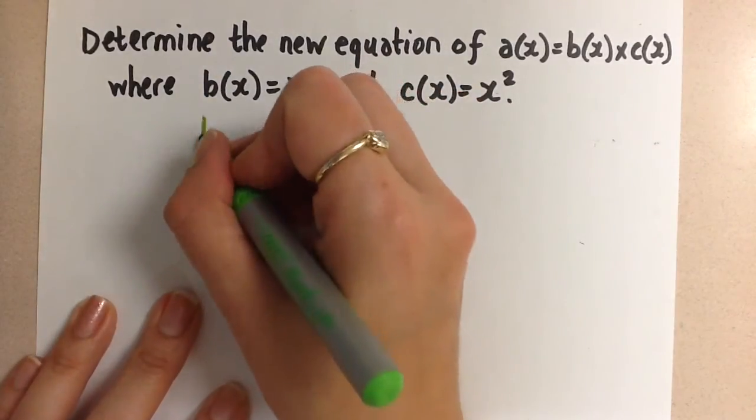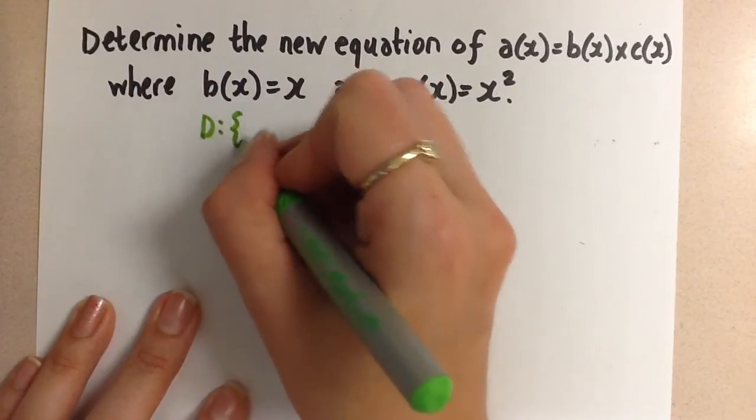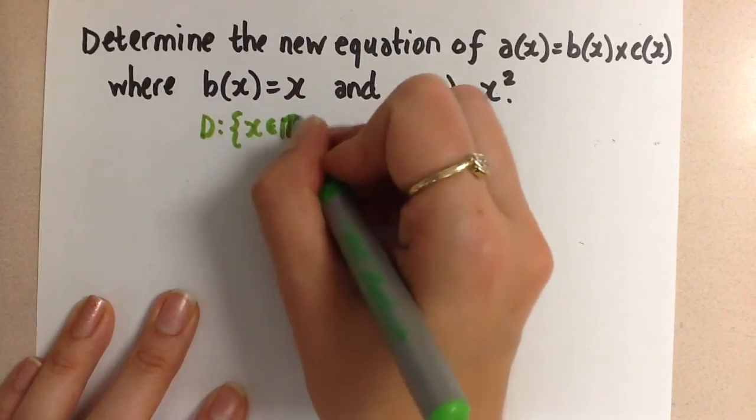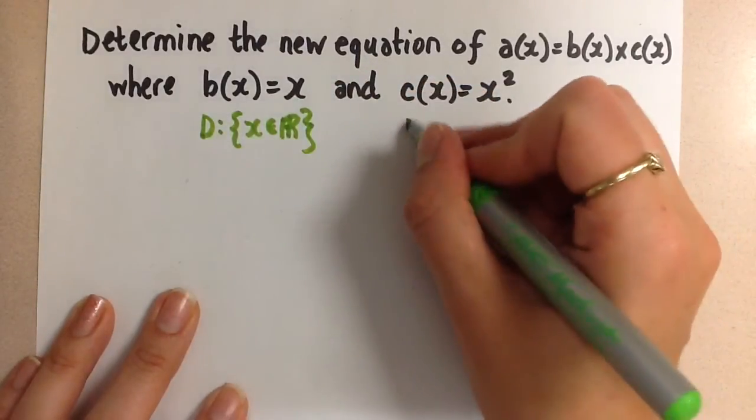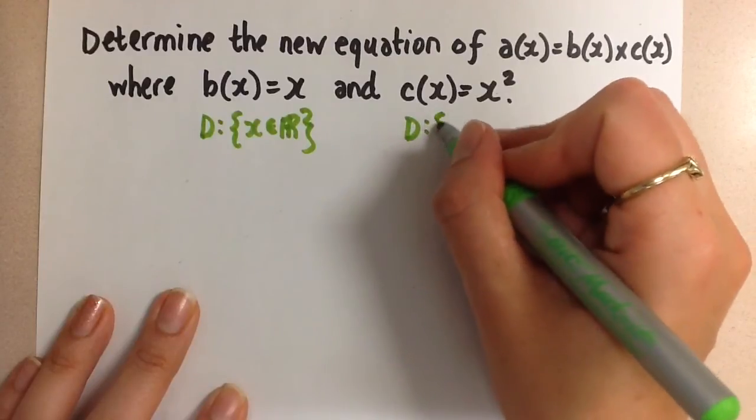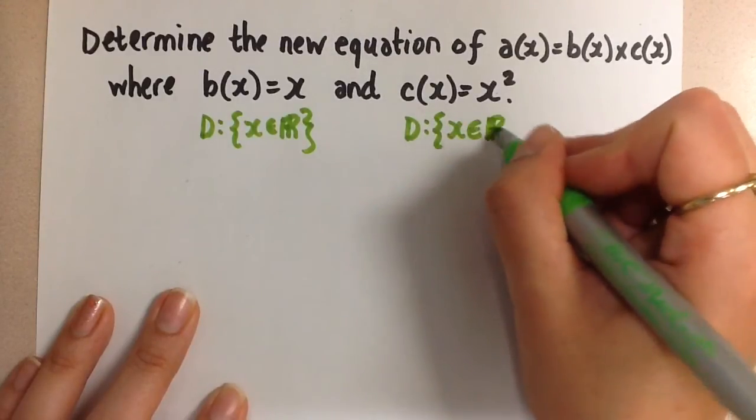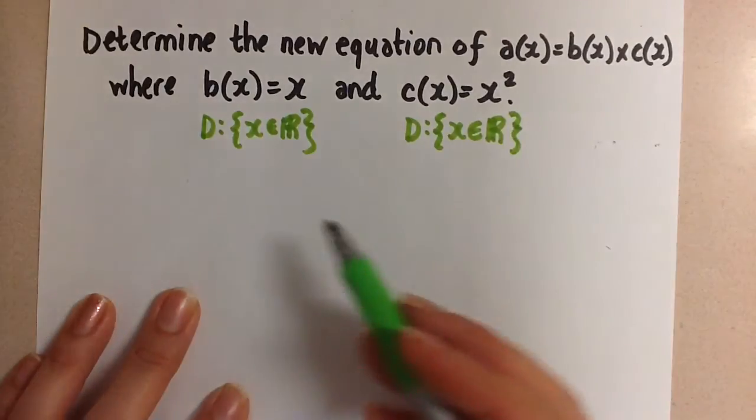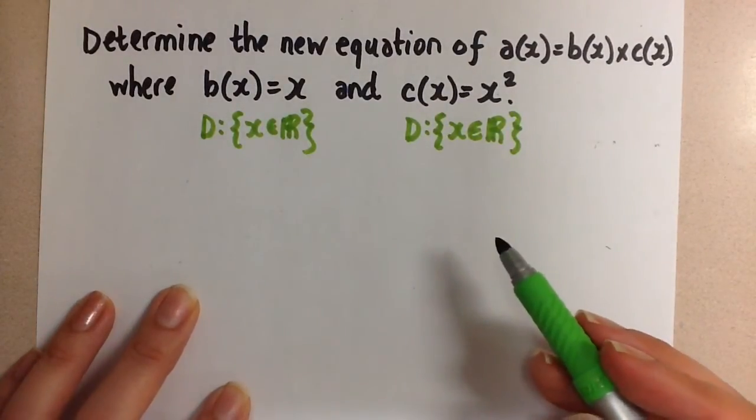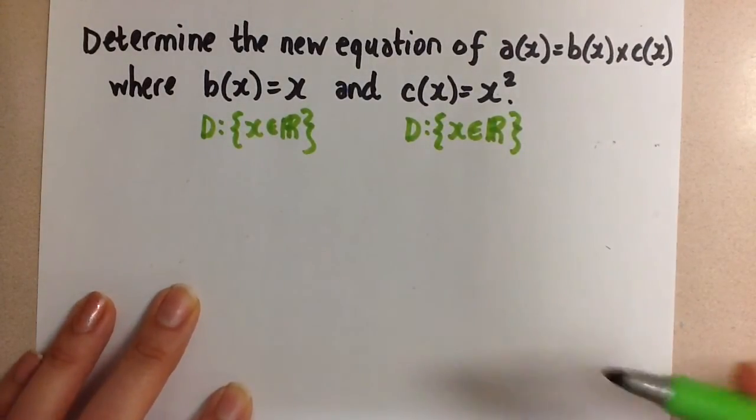The domains for both of these functions are exactly the same. They span all of the real numbers. So both functions have a domain that is the set of real numbers, which means their domains are overlapping, and so we can combine these two functions.